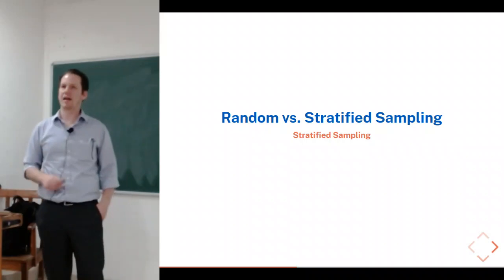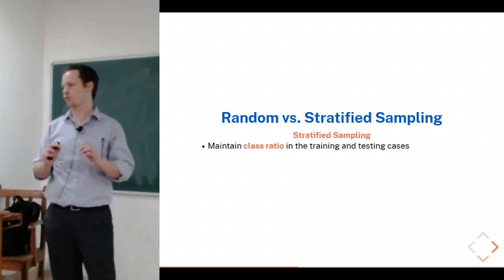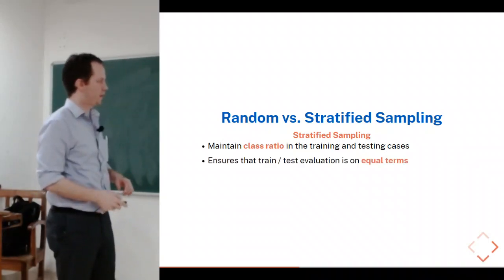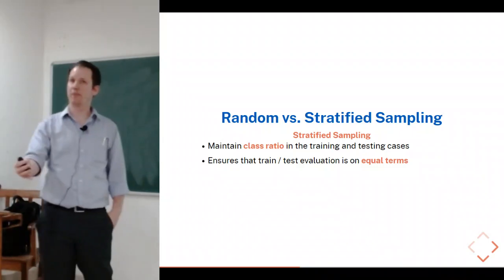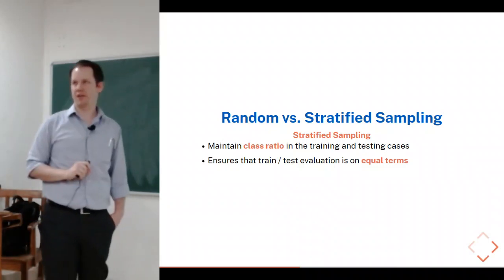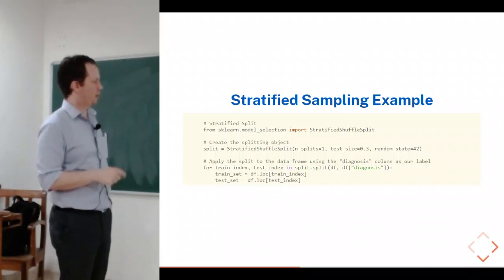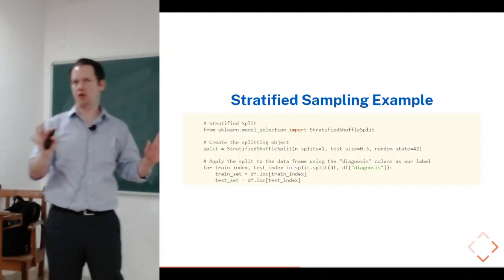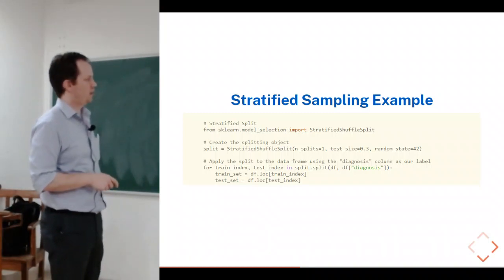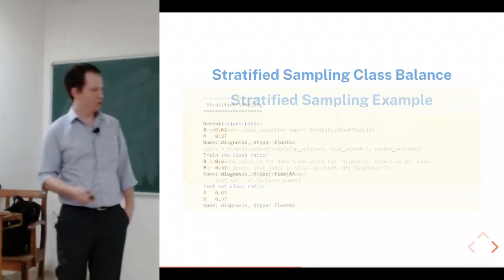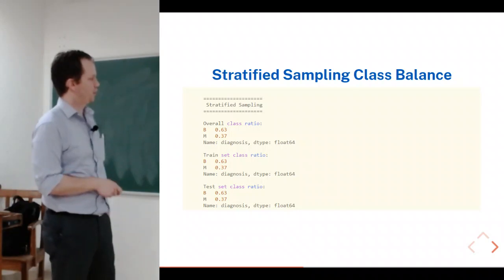To address this, we use stratified sampling instead. Stratified sampling maintains the class ratio in both training and testing sets, so both reflect the same percentage of each class as in the original dataset. This ensures evaluations are on equal terms — if you get 50% accuracy on training, you'll likely get 50% on testing. In Python, there's actually a function in scikit-learn that does this stratified shuffling automatically. You create the shuffler, specify test size, set a random state for reproducibility, then pull out training and testing sets — ensuring the 63/37% split is reflected in both.